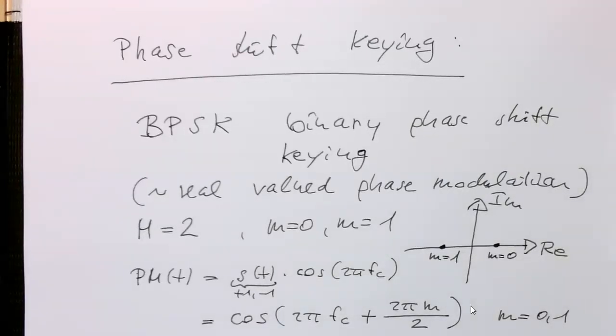So where we have the carrier frequency here and then we're introducing with M equals 0, we've got no phase shift. And then obviously with M equals 1, we've got a phase shift of pi.